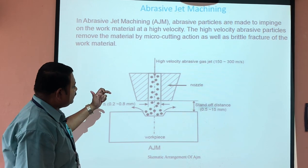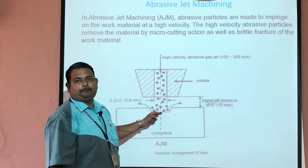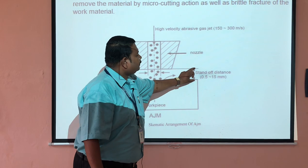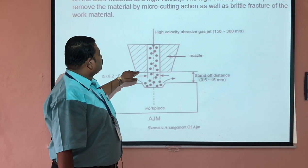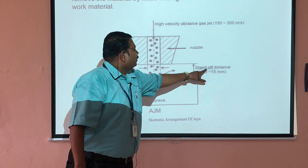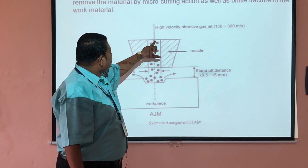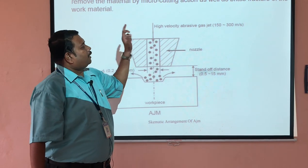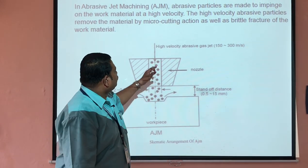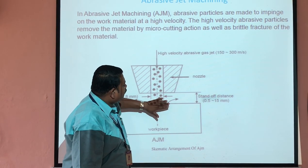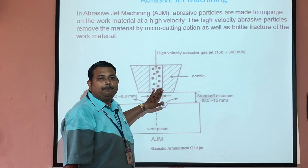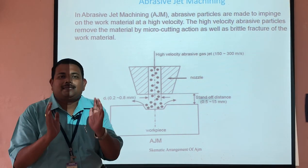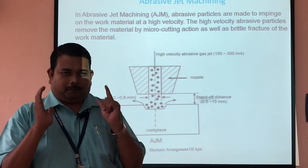In abrasive jet machining, we impinge abrasive particles onto a given workpiece with a standoff distance of 0.5 to 15 mm. Standoff distance is the distance between the nozzle tip and the given workpiece. During this standoff distance, the abrasive jet travels at a very high velocity of around 150 to 300 meters per second and impinges on the workpiece. Due to the impact of the abrasive particle on the workpiece, metal removal takes place. This is the basic principle of the abrasive jet machining process.